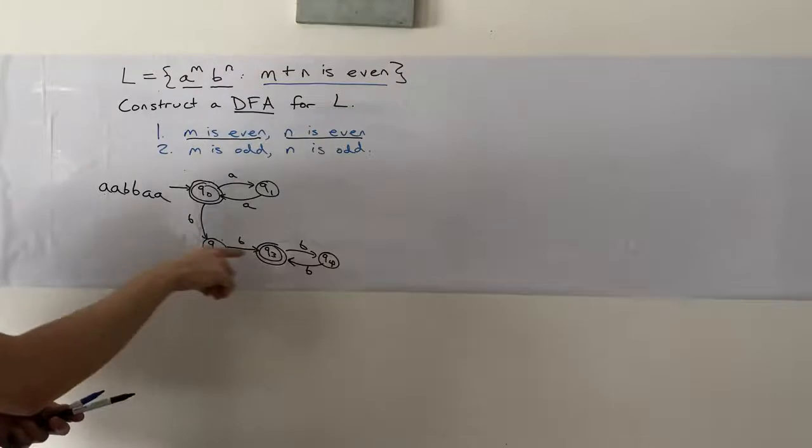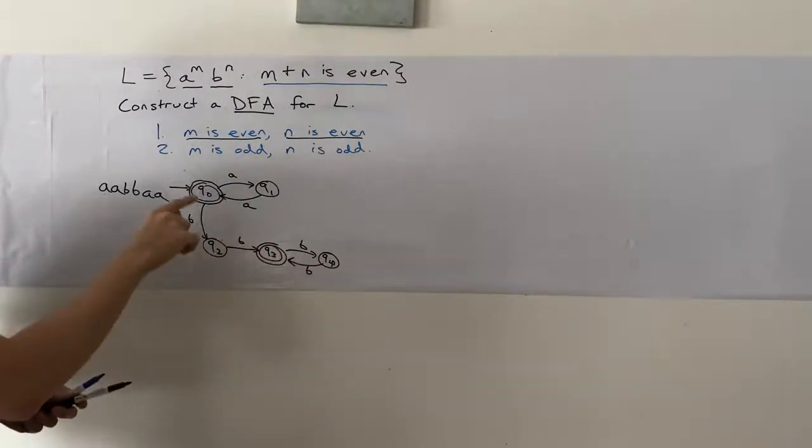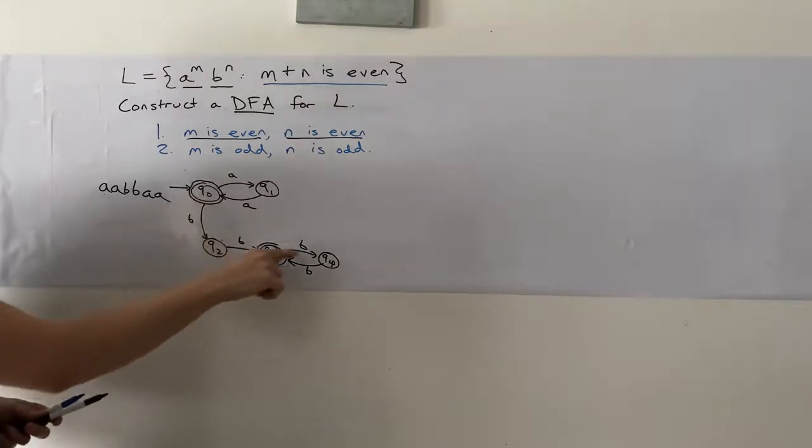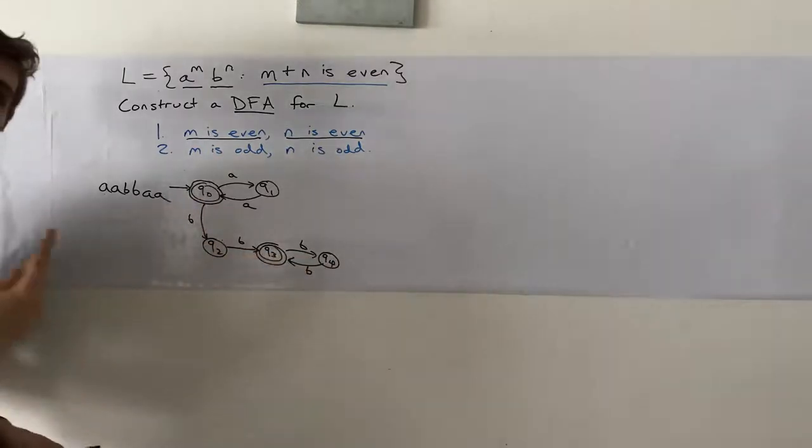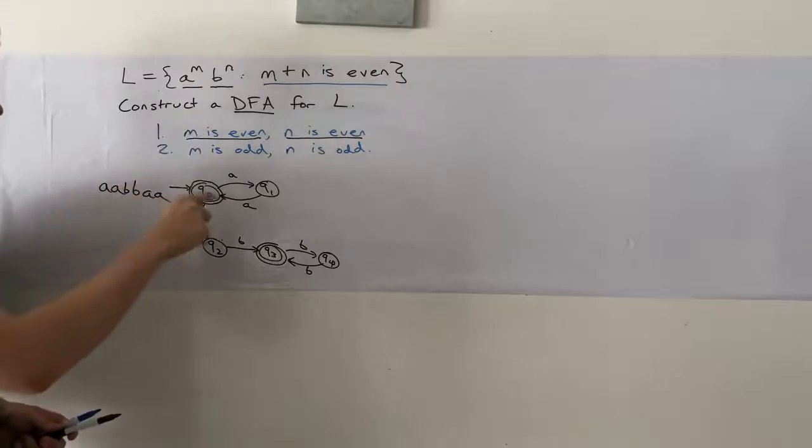And this actually enforces, I know it's not a DFA yet, this enforces that we have an even number of B's. Because think about it, if we have two B's here, after we do the A part, we have two B's and that gets us to Q3.